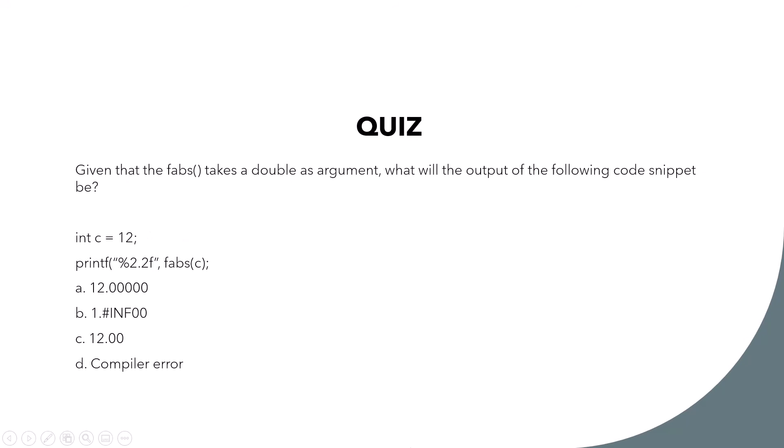Now that we've discussed all these functions, let's do a quiz. Given that fabs takes a double as argument, what will be the output of the following code snippet? Integer c is equal to 12, printf with format %.2f, then fabs of c. The answer is 12.00.